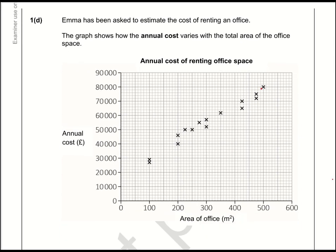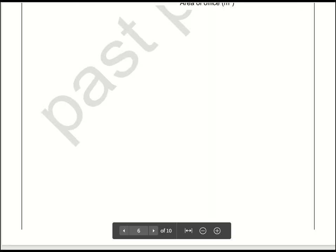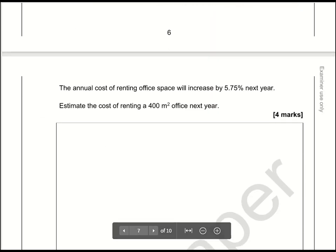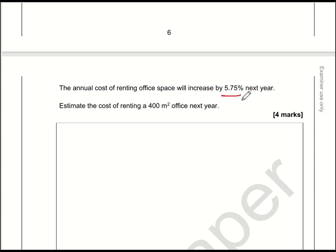On to question 1D. We've got a graph showing the annual cost and how it varies with the total area of office space. We need to estimate the cost of renting a 400-square-metre office next year, and we're told it will increase by 5.75% next year. So we need to find the cost of a 400-square-metre office this year, then increase it by 5.75%.